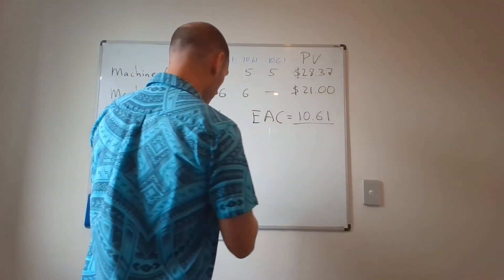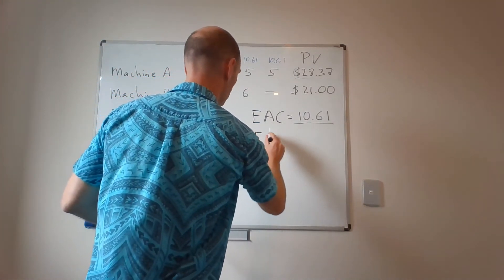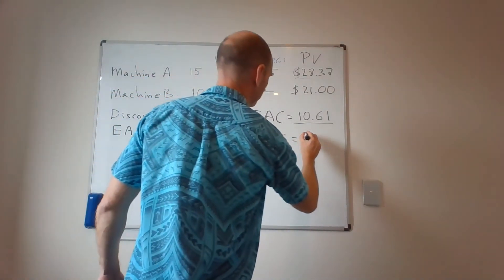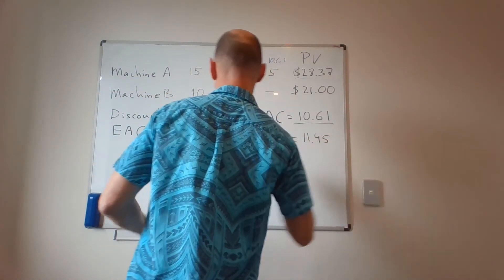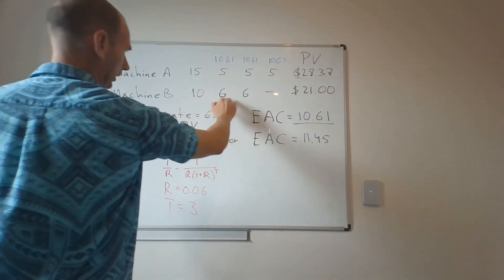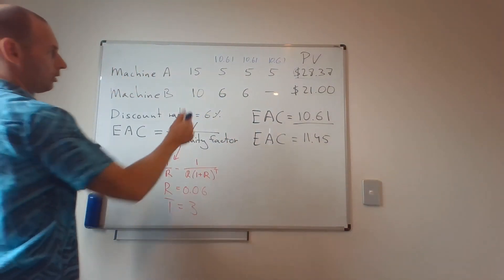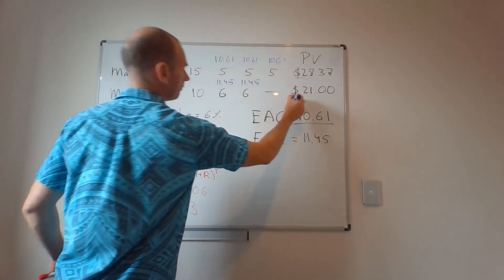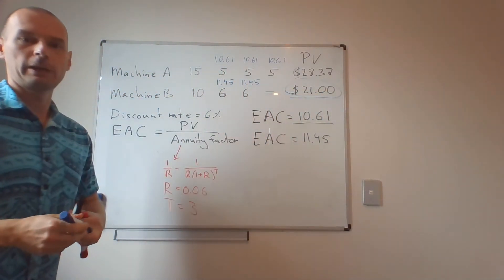For Machine B, the equivalent annual cost is 11.45. So instead of 10 and 6, 6, I go with 11.45, 11.45 with the present value of 21.